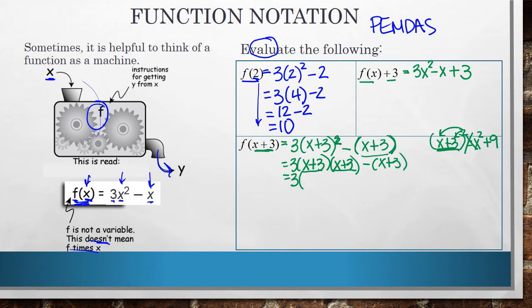So now when I multiply this out, I get x times x is x squared. x times 3 is 3x. 3 times x is 3x. Add those together and you get 6x. And then 3 times 3 is 9. And then I'll distribute this negative sign through so I get minus x minus 3.